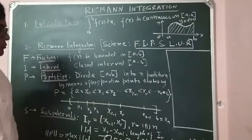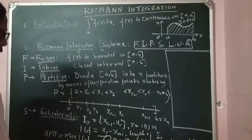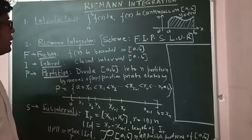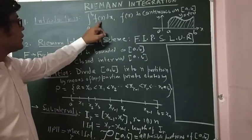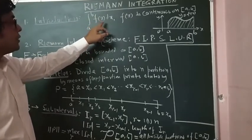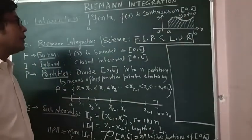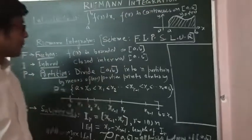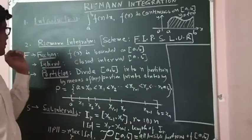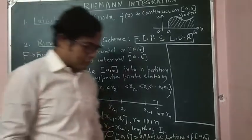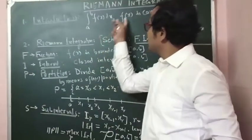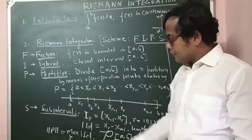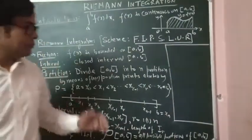Now, what is Riemann integration? Something different from this integration. What is the difference between our usual integration and the Riemann integration? Riemann integration is that our usual integration is defined on a class of functions which are continuous in the closed interval [A, B]. Now, the Riemann integration will relax the condition of continuity. Instead of continuity, we consider another class of functions which are not necessarily continuous in the interval [A, B]. So to define Riemann integration, the definition contains much more terms.